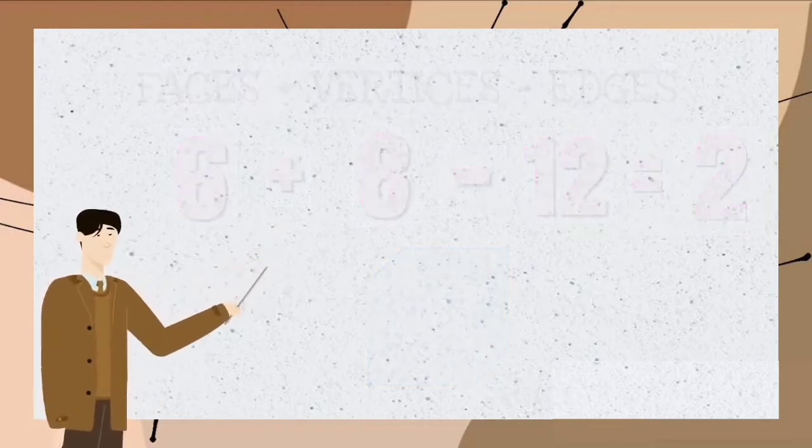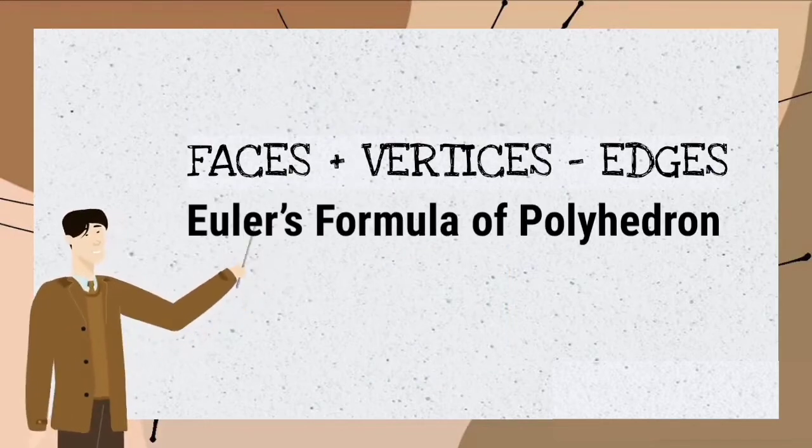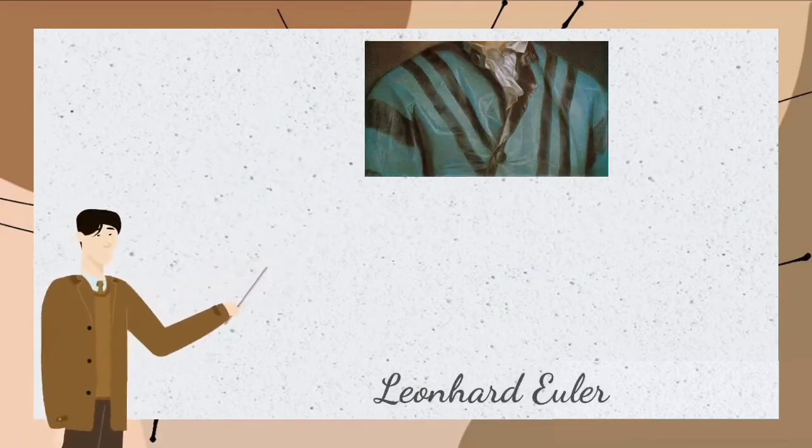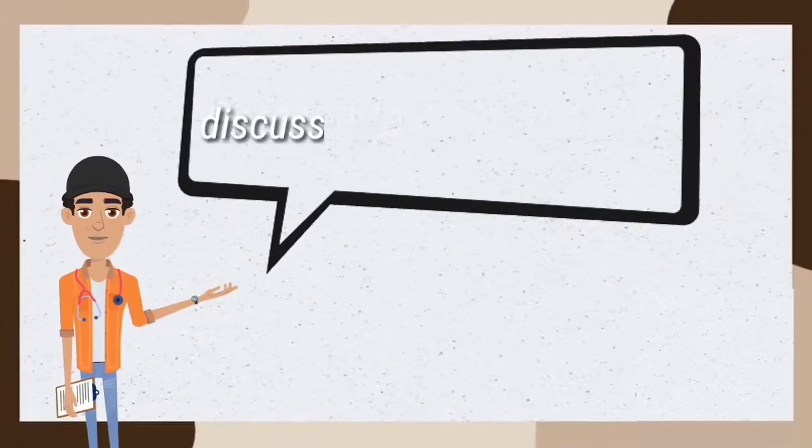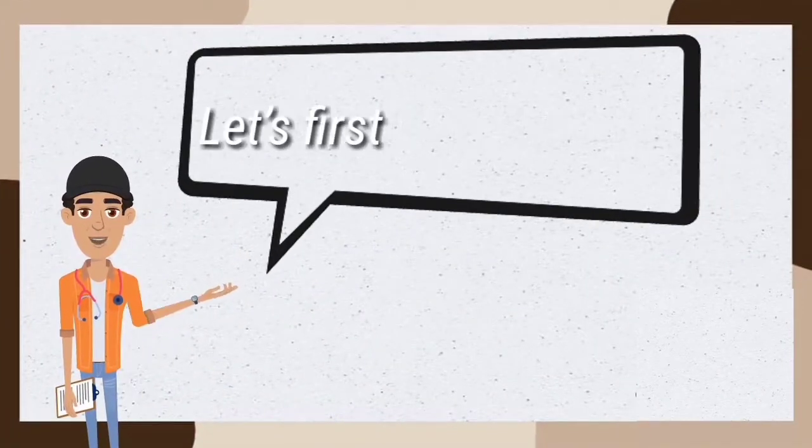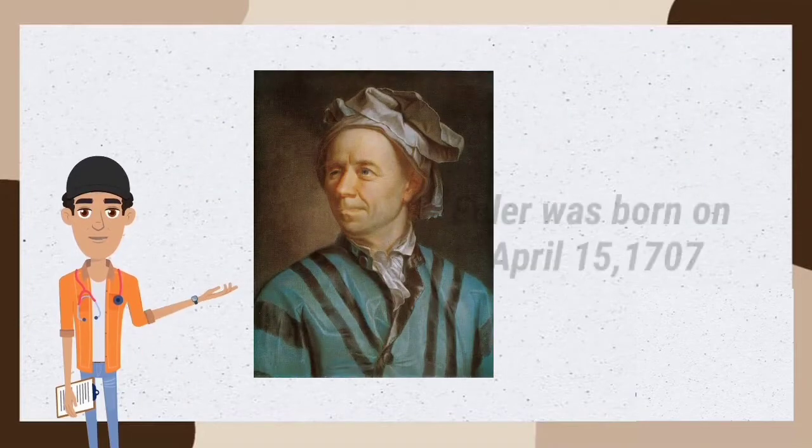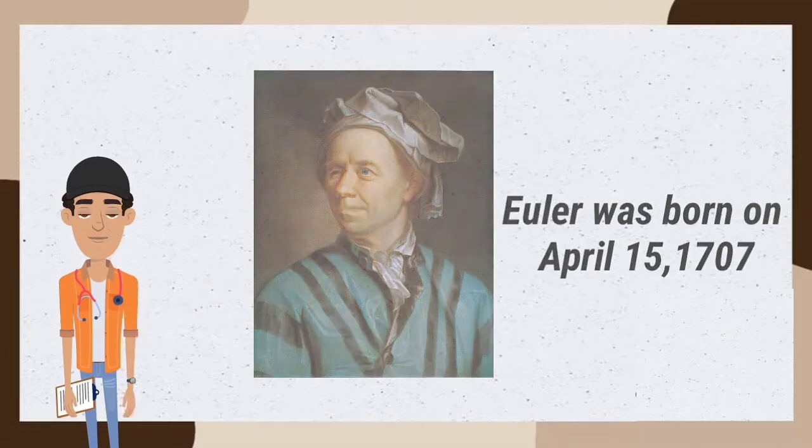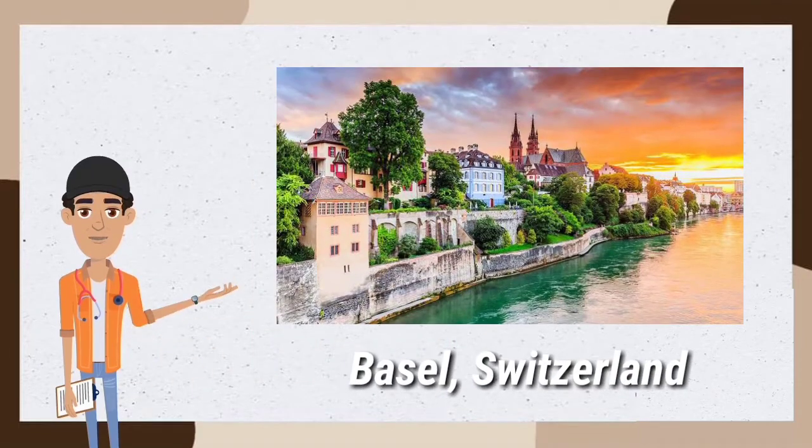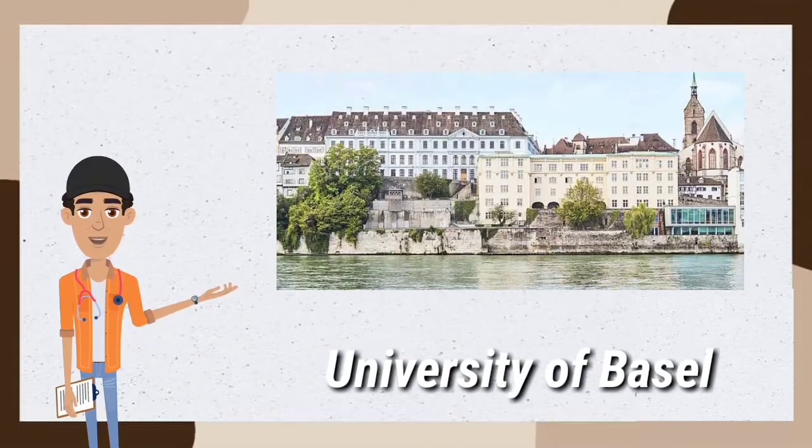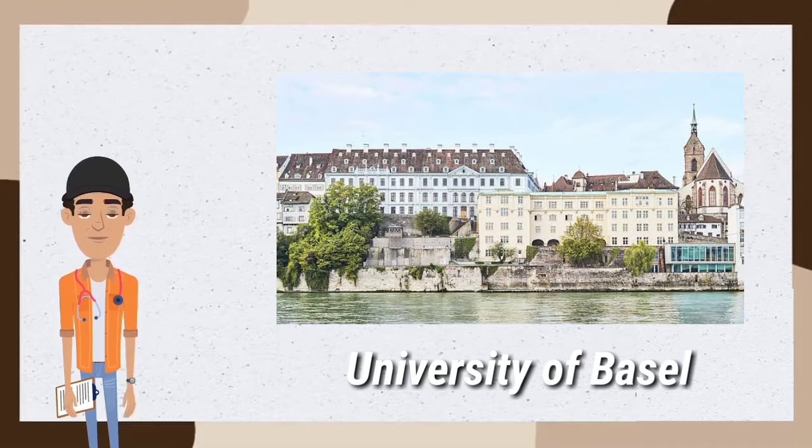This phenomenon is called Euler's formula of polyhedron, which was first observed by Leonhard Euler. Before we continue our discussion of Euler's formula, let's first discuss Euler. The great mathematician Euler was born on April 15, 1707 in Basel, Switzerland. He studied at the University of Basel and earned his master during his teens.